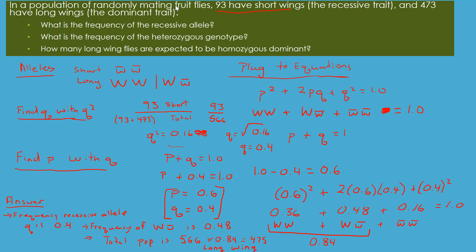And there you go — that's how to answer one of these questions. Identify your alleles, find q using q squared, then find p using q, make sure you have your equations, and understand what each part of the Hardy-Weinberg equation means.